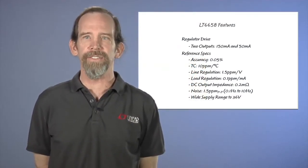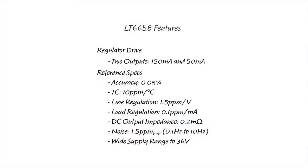As with most Linear Technology voltage references, the LT6658 offers high precision with a 0.05% initial accuracy and a 10 parts per million per degree C temperature coefficient. Other common voltage reference specifications such as line and load regulation, output impedance, and supply rejection are exemplary.